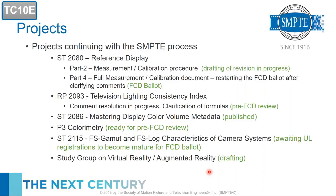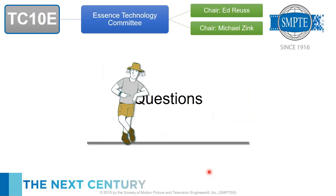The FS gamut and FS log characteristics of camera systems documents are nearly ready for FCD ballot. There's still some work ongoing in TC30MR on the universal labels — we're waiting for those ULs to mature before those documents go to FCD ballot. Finally, there's a new study group on virtual reality and augmented reality. We received a liaison from the Virtual Reality Industry Format Forum suggesting SMPTE and VRIF work together and exchange information on VR and AR. The study group is looking at production of virtual reality content — please join if you're interested.